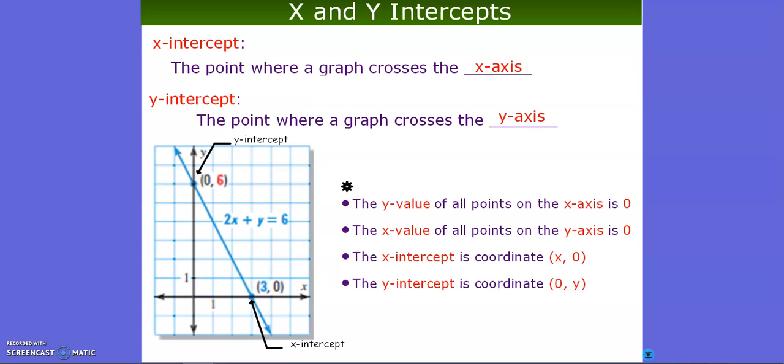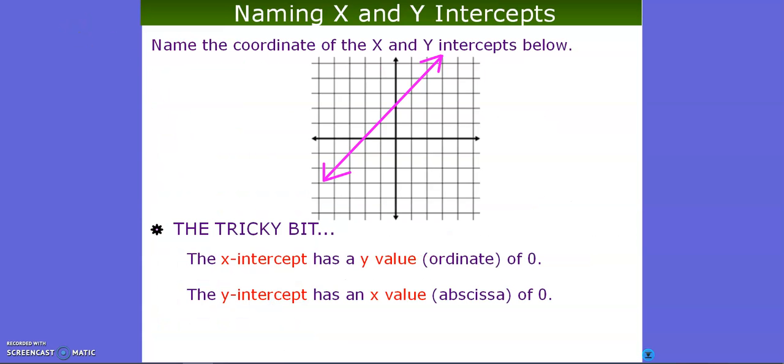So just to review, an x intercept is a point where the graph crosses the x axis, so right here, and the y intercept is a point where the graph crosses the y axis. If you're an x intercept, then your y value is zero. If you're a y intercept, then your x value is zero, and we can start building a table of values through that. Once we have our two intercepts, we just go ahead and graph the two points and connect them with the line.